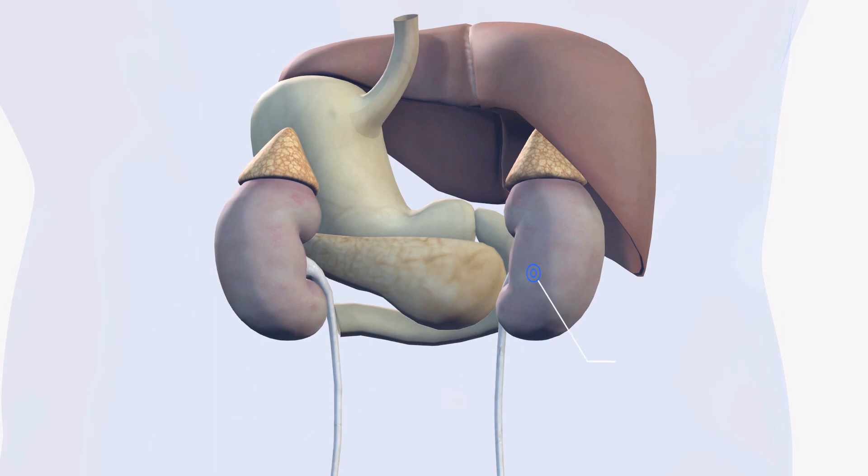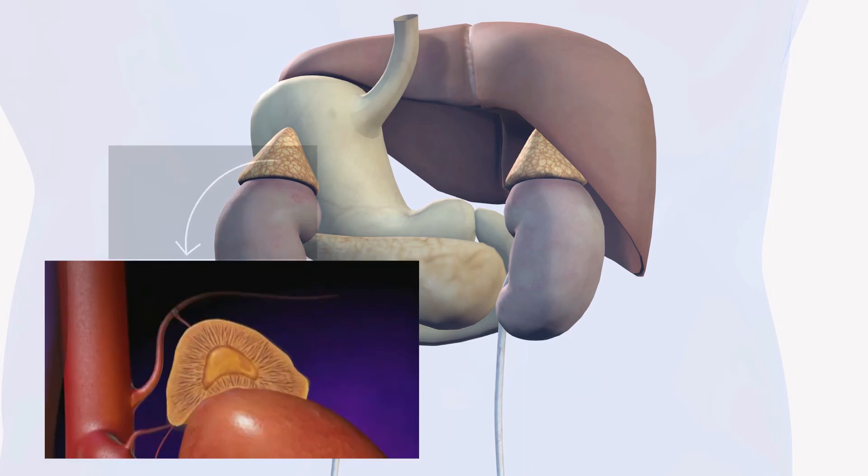Kidneys also secrete hormones. They secrete erythropoietin which stimulates red blood cells production in the bone marrow. The kidneys also have the very important adrenal glands. We have two adrenal glands of course because we have two kidneys. If we cut a cross section of the adrenal glands, we have the adrenal cortex, the outer part of the adrenal glands, and then we have the adrenal medulla, the middle of the adrenal glands.